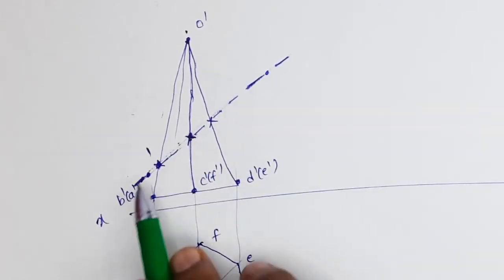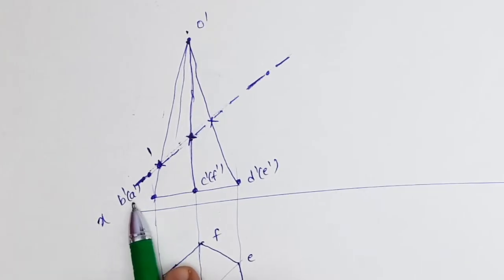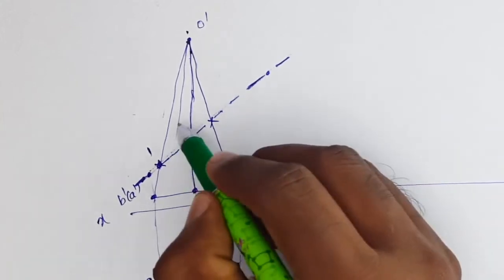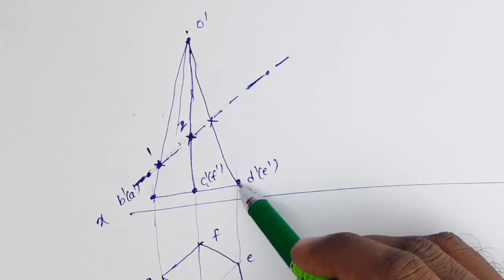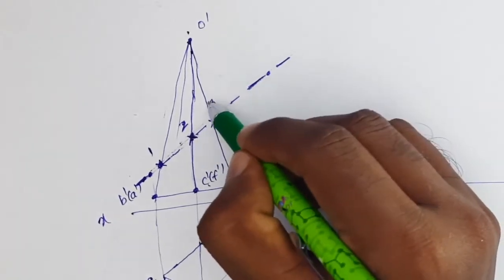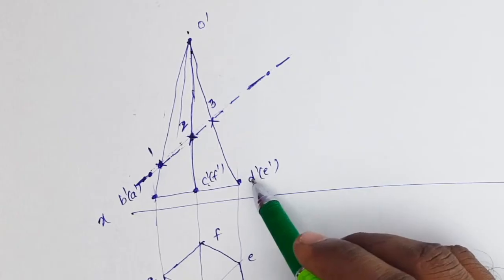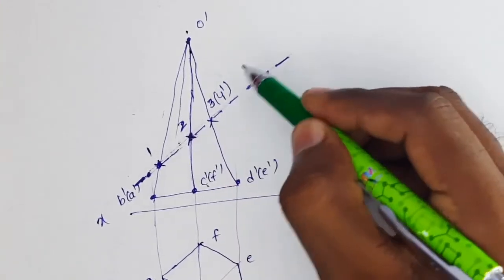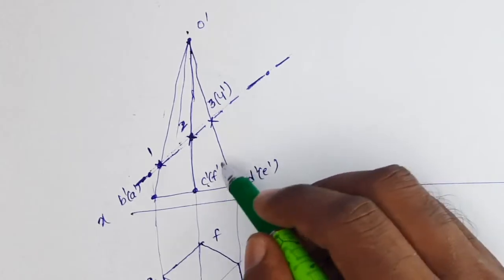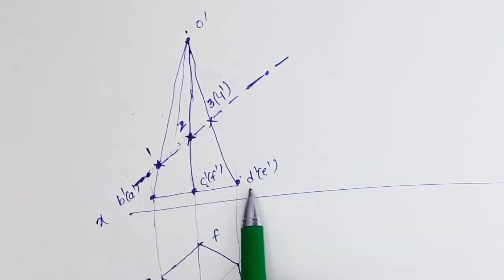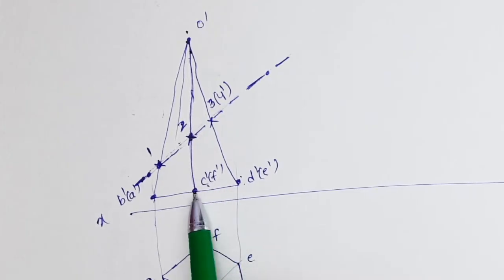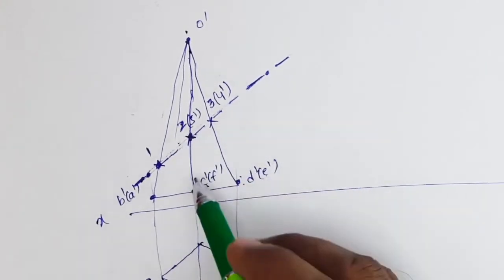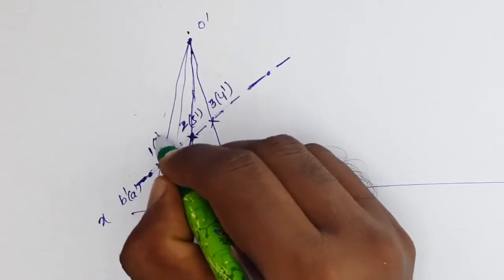Now I will name the intersection points. Point 1 is at OB. Point 2 is at OC. Point 3 is at OD. Point 4 is at OE — this has a bracket indicating the back side. Point 5 is at OF. And point 6, the last one, is at OA.